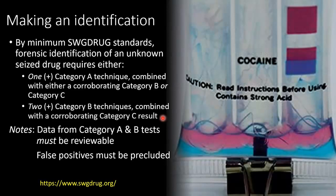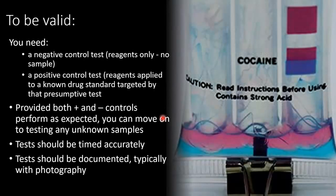However, you cannot make an identification based on presumptive tests alone. In order for the results of a presumptive test to be valid, you need to perform a negative control test first — that's a test where you apply the reagents but no sample — and the point is to prove there's no prior contamination of the test kit. If you get a positive result on your negative control, you would discard the kit and assume it's been contaminated. If your negative control comes up with nothing, the next test you perform is a positive control, where the reagents are applied to a known drug standard. This shows the presumptive test is going to work optimally and also provides information on what you're expecting to see for a positive result. Provided your positive and negative controls have performed as expected, you can move on to testing your unknown samples.